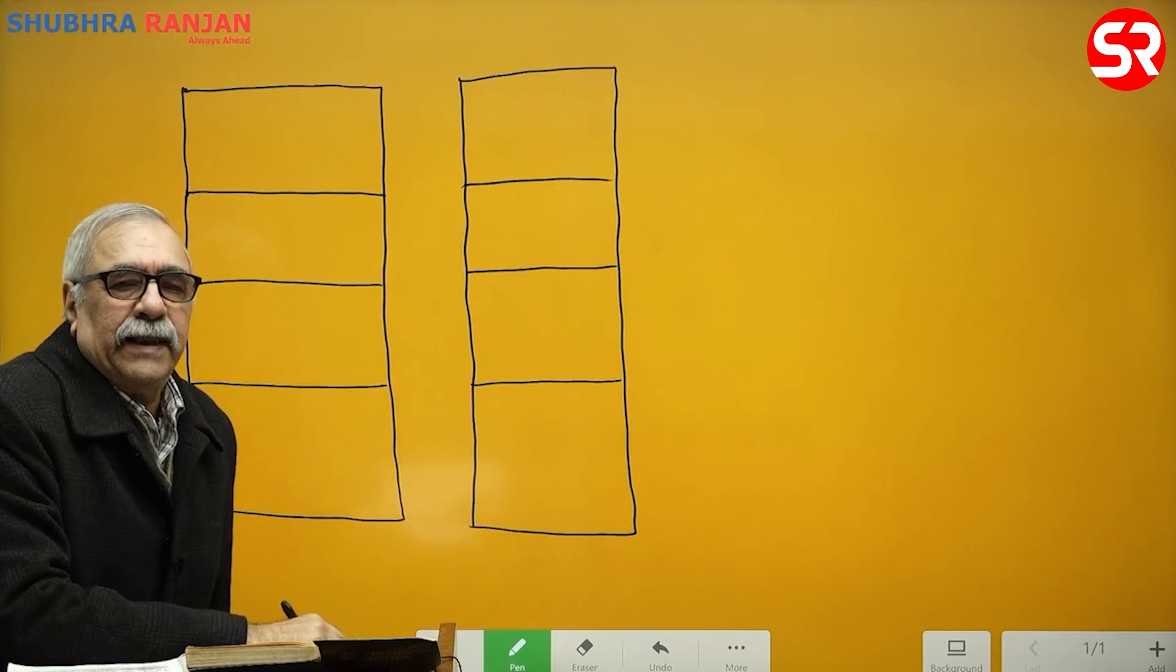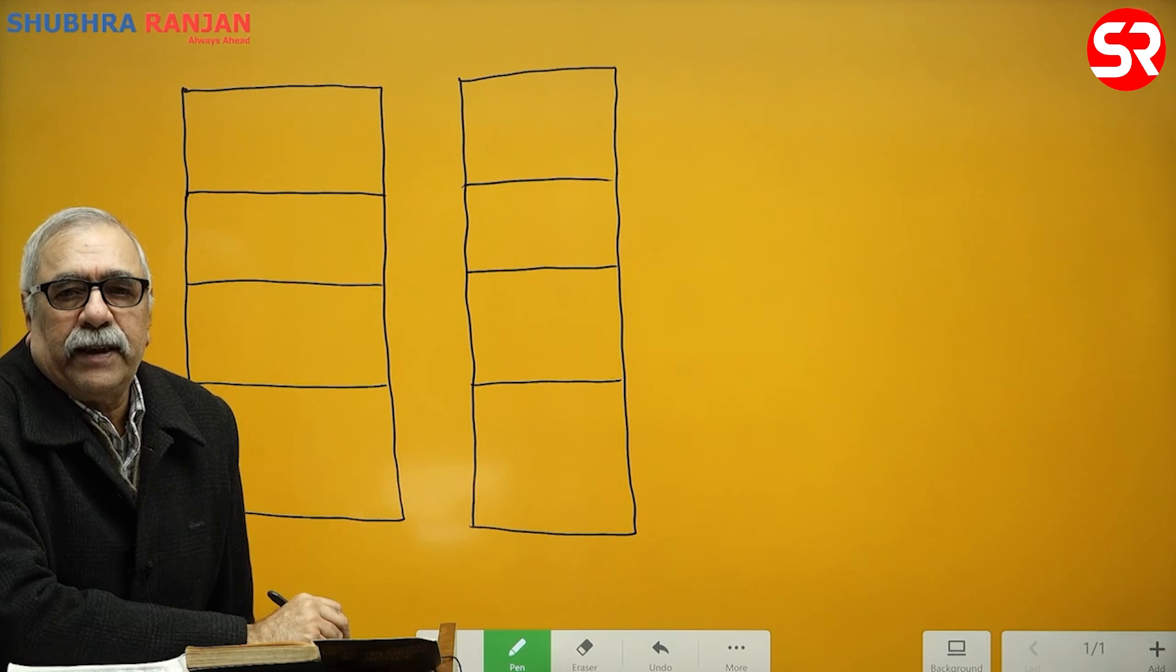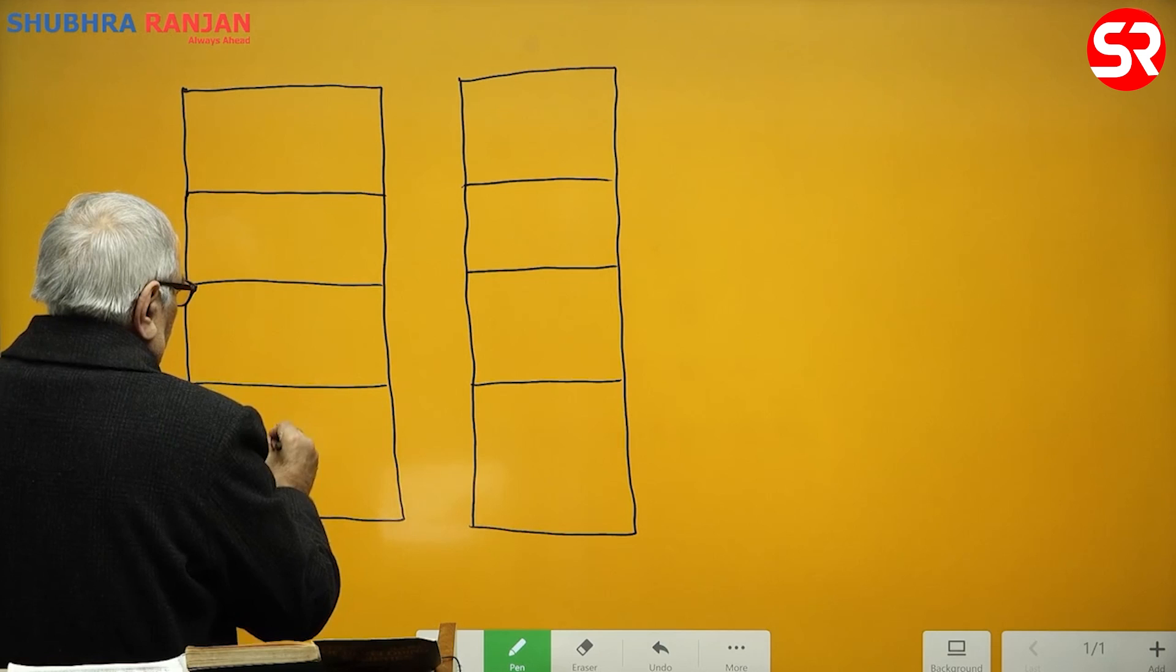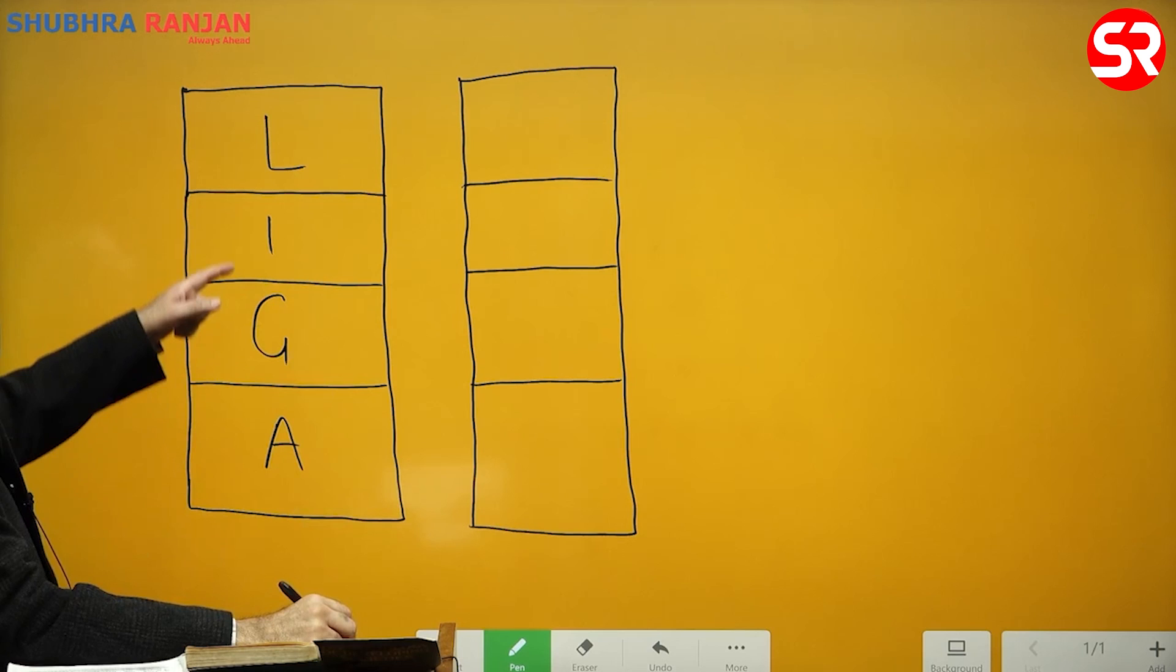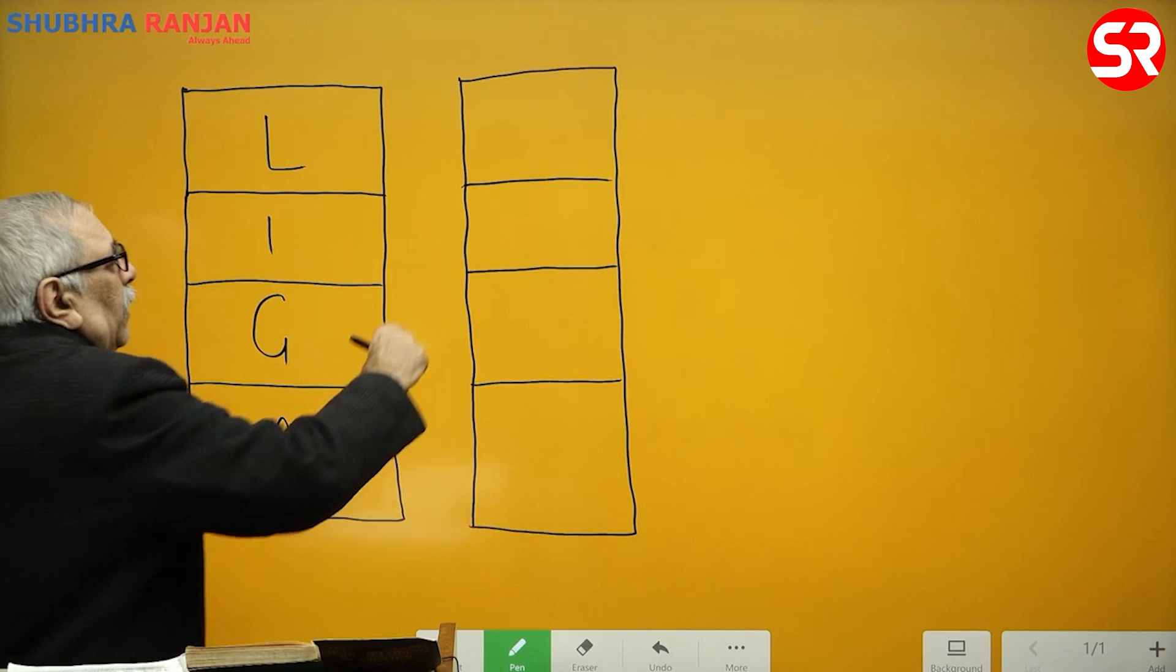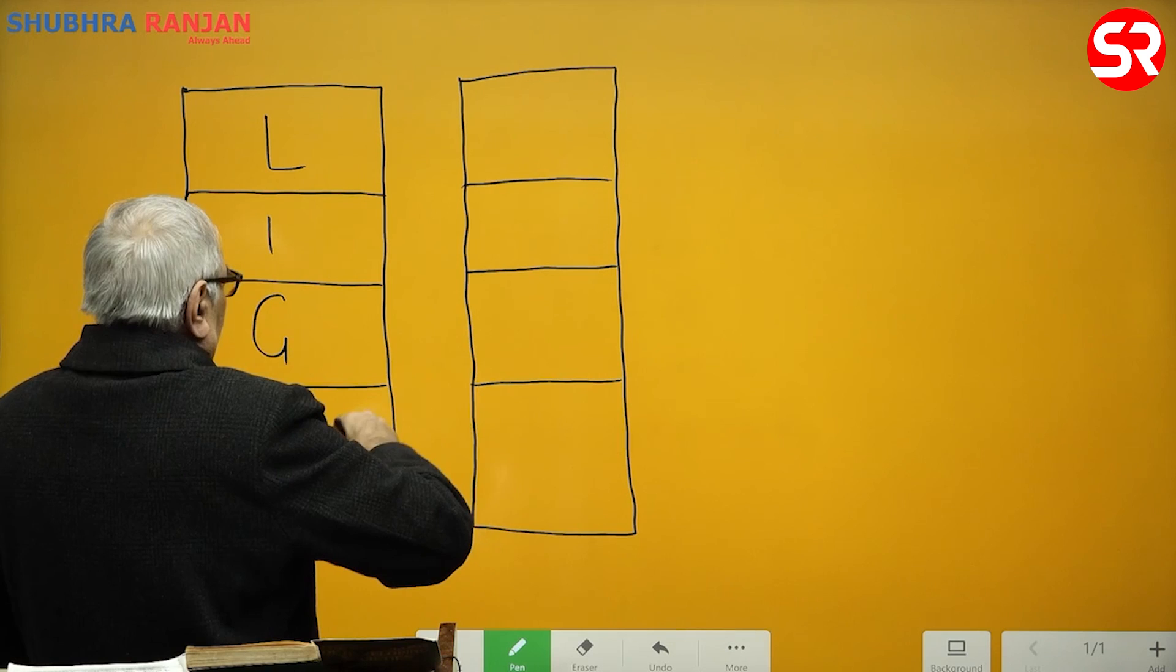Now he goes back to his AGIL schema to account for change in society. This is his AGIL schema, which is presented in the form of a hierarchy, and here are the corresponding subsystems.